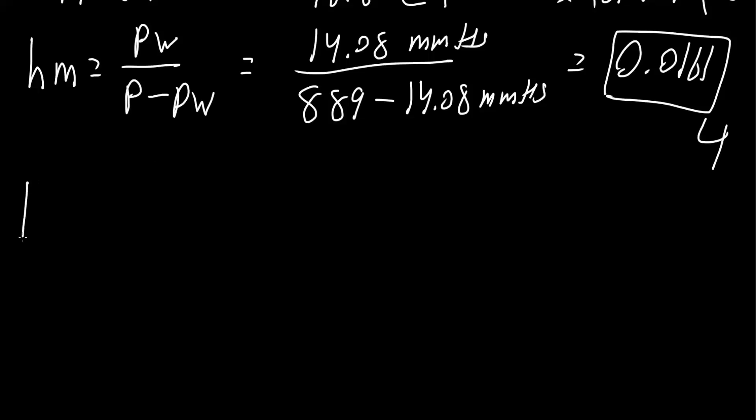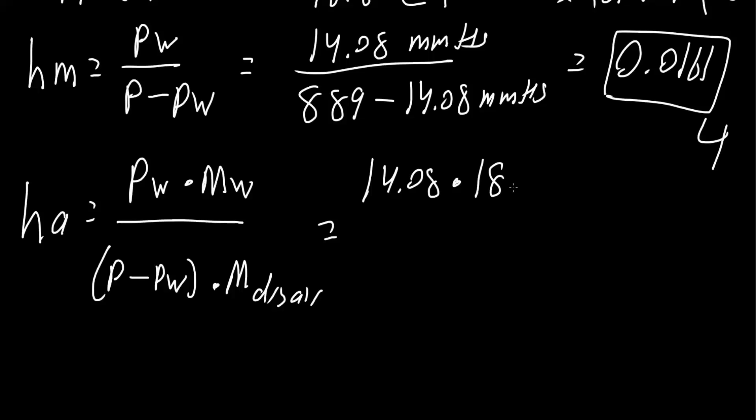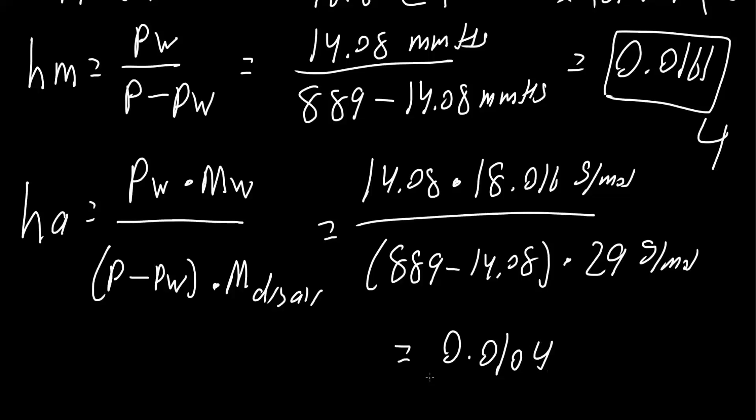Finally, we want the absolute humidity. This equals Pw times the molecular weight of water divided by (P minus Pw) times the molecular weight of dry air. So we have 14.08 mg of mercury times the molecular weight of water, which is 18.016 g per mole, divided by P minus Pw, which is 889 minus 14.08 mg of mercury, times the molecular weight of dry air, which is 29.016 g per mole. This gives us 0.0104 for the absolute humidity.